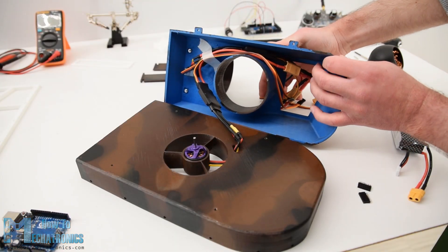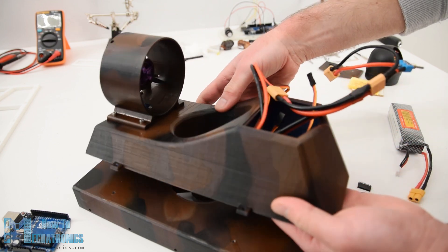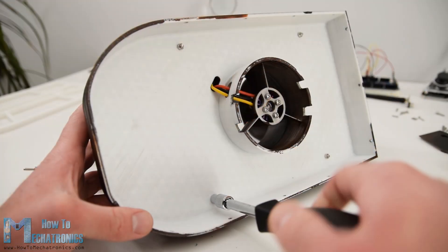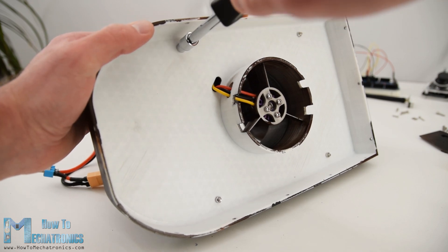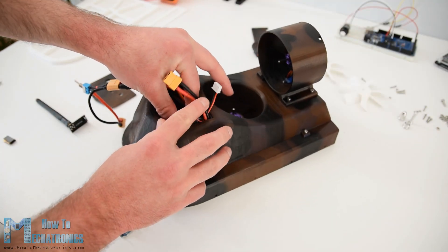Next I placed the ESCs into the main body and trapped them between it and the hull of the hovercraft. Then using four M3 bolts I fastened the two parts together. From the top opening of the body I then inserted the battery into the cockpit area.